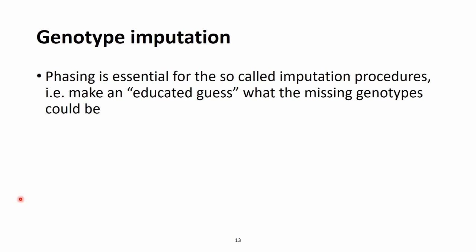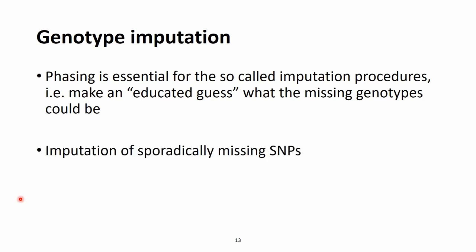When we determine these haplotypes or phases in a population, they are really useful for a number of purposes, and one of these purposes is the so-called genotype imputation. The SNP genotyping is fairly reliable but occasionally we see missing genotypes. With the genotype imputation process we can make an educated guess how to fill in these missing genotypes so we get full information. The imputation process is nothing else than filling in missing information.